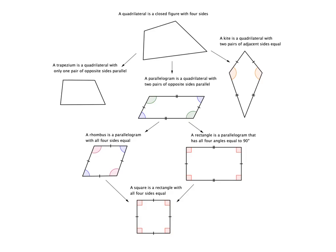We're going to have a look at quadrilaterals today and quickly summarize their properties with regard to angles and sides. Let's start with a general idea of a quadrilateral — 'quad' indicates four, so a quadrilateral is a closed figure, with no gaps, that has four sides.